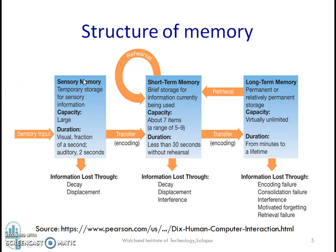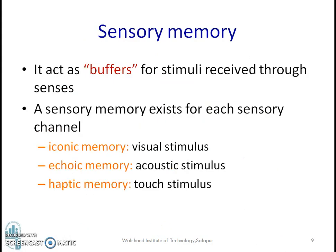What is sensory memory? People have a special ability and capacity for briefly retaining a relatively large amount of information — this capacity is called sensory memory. Sensory memory is basically information preserved in its original sensory form for a brief time. It acts as a buffer for stimuli received through the senses. A sensory memory exists for each sensory channel: for iconic memory we have visual stimulus, for echoic memory we have acoustic stimulus, and for haptic memory we have touch stimulus.